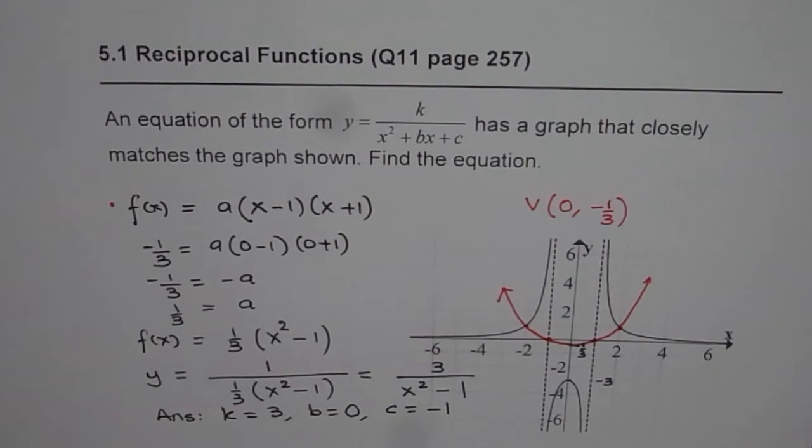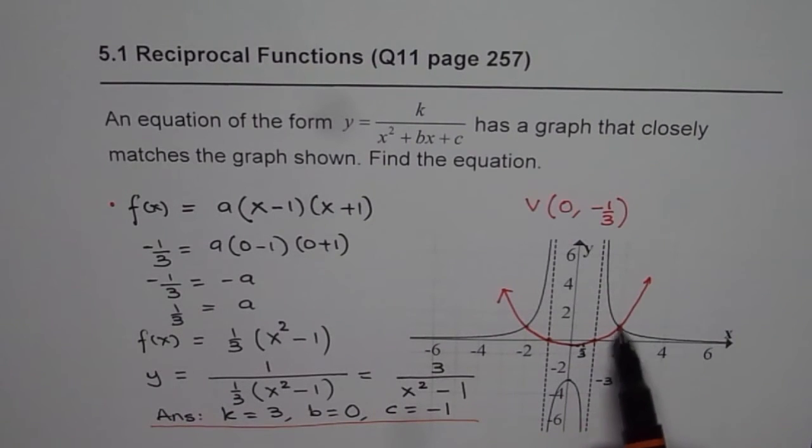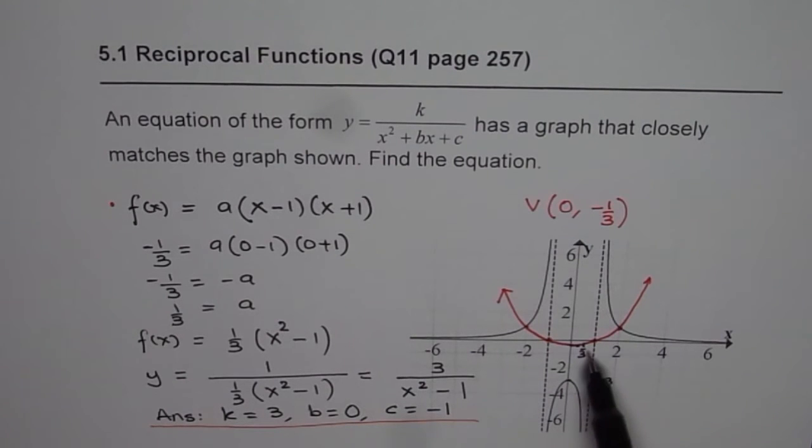So that is the solution for the given question. The strategy here is, from the reciprocal graph, we need to figure out the original function, the f of x, which seems to be a parabola. Now the local maximum of the reciprocal is minus 3. Its reciprocal is minus 1 over 3. That becomes the minimum of the parabola. And we already know the two x-intercepts.